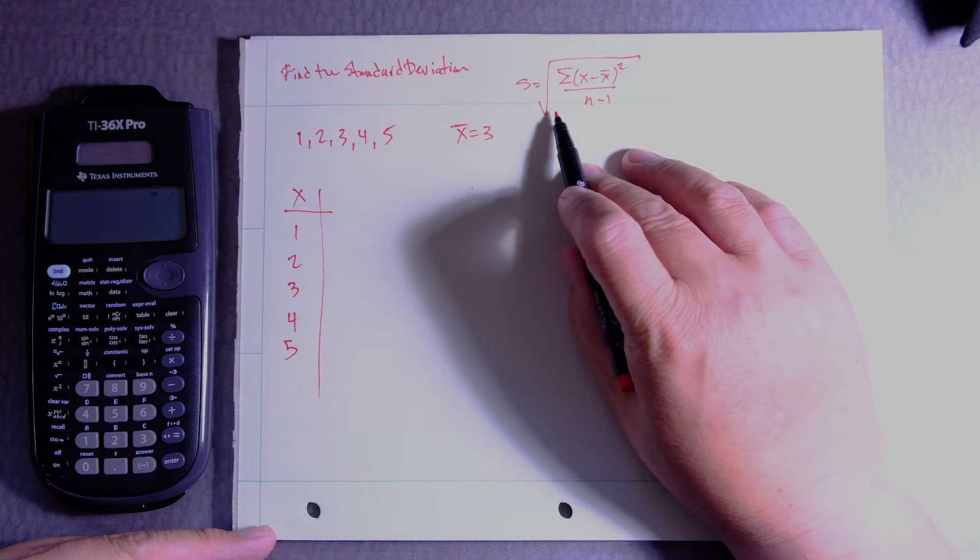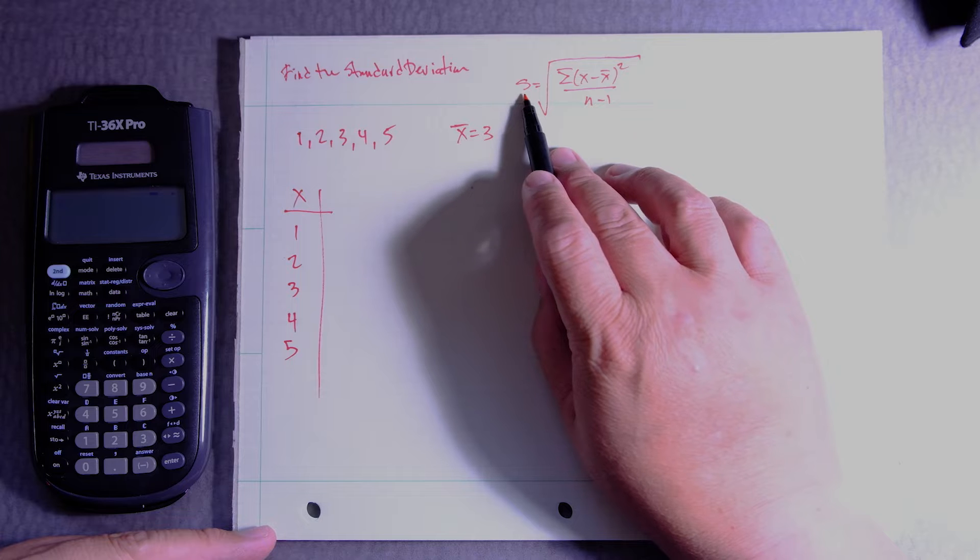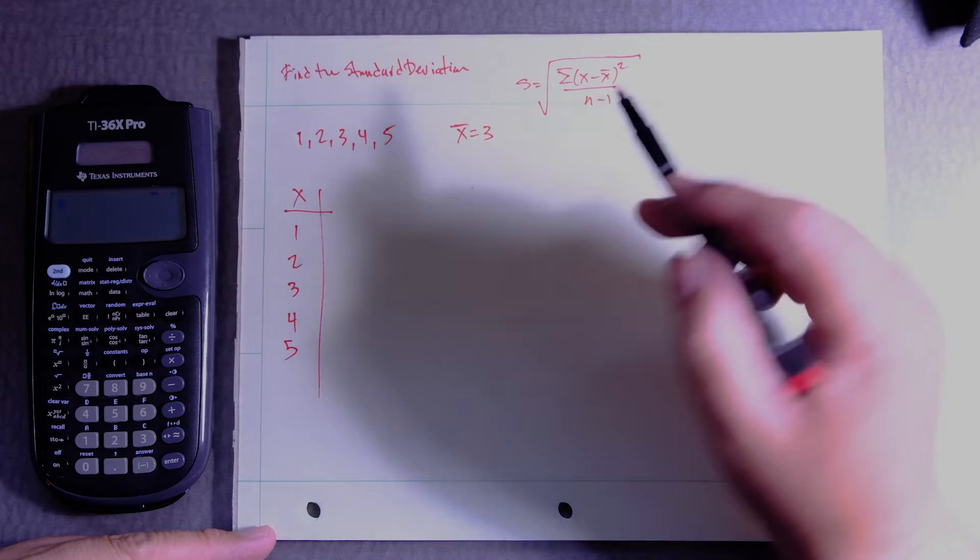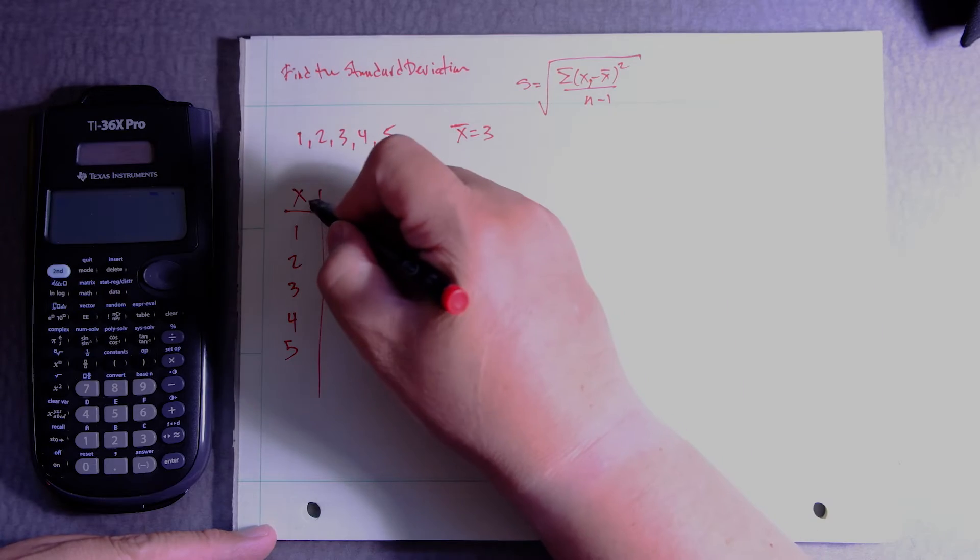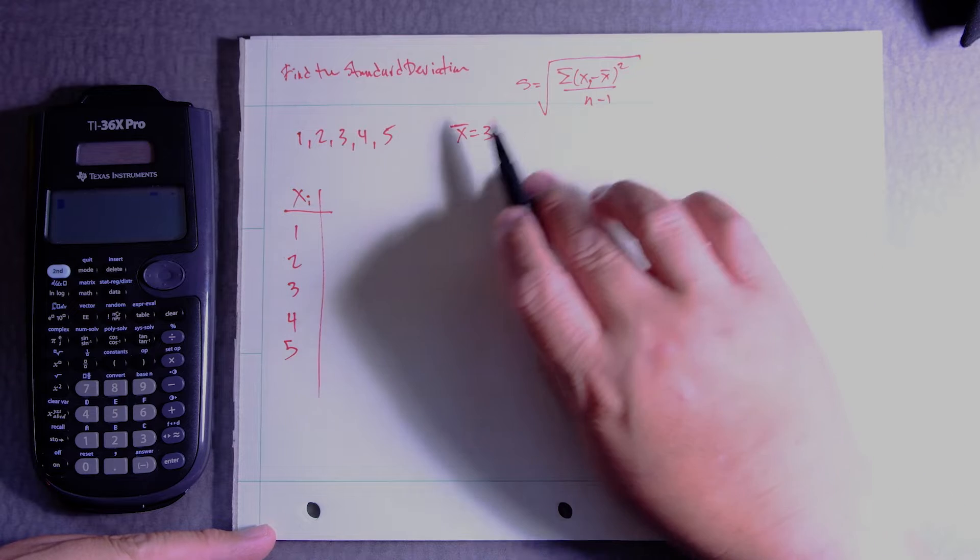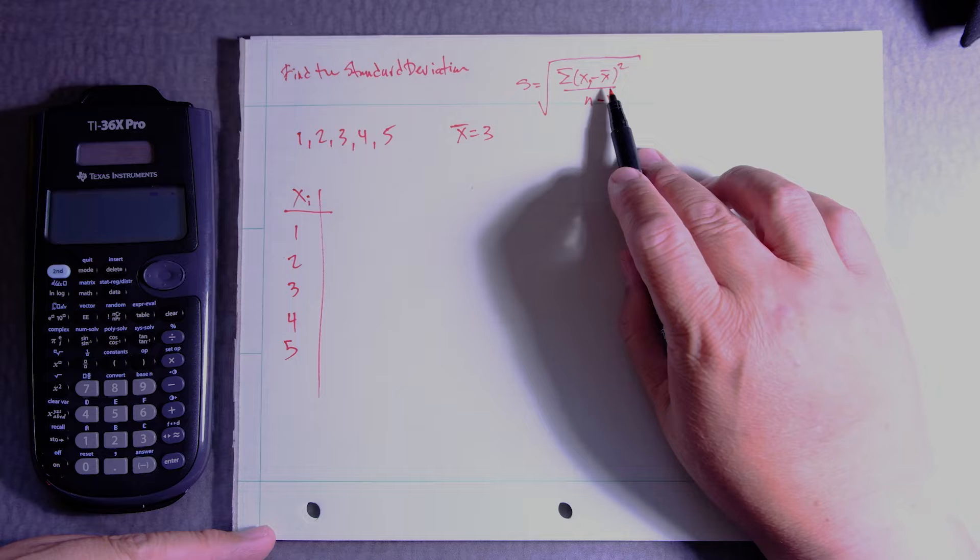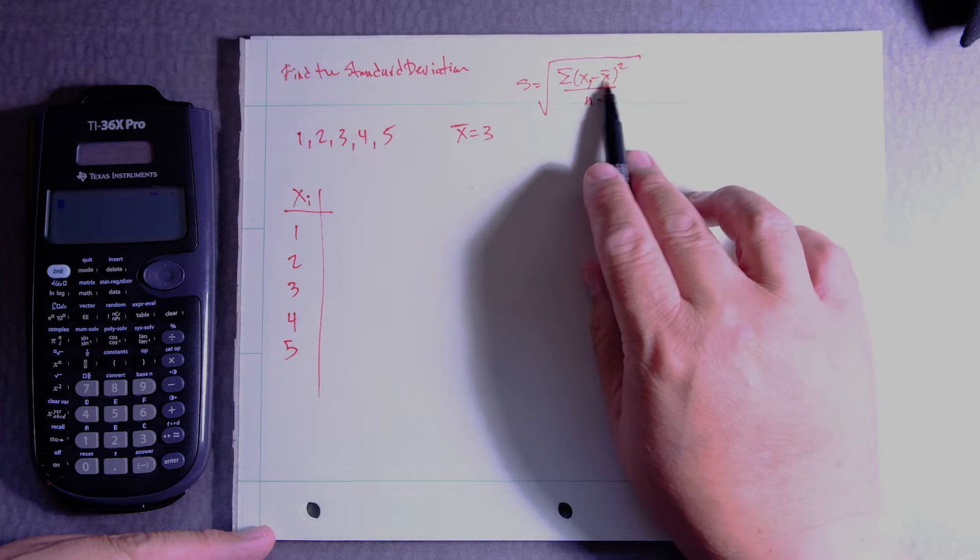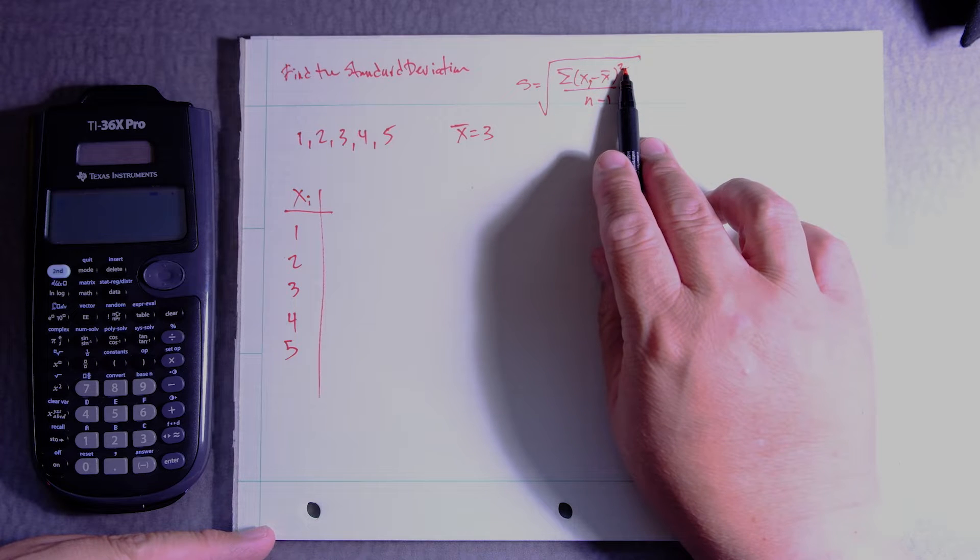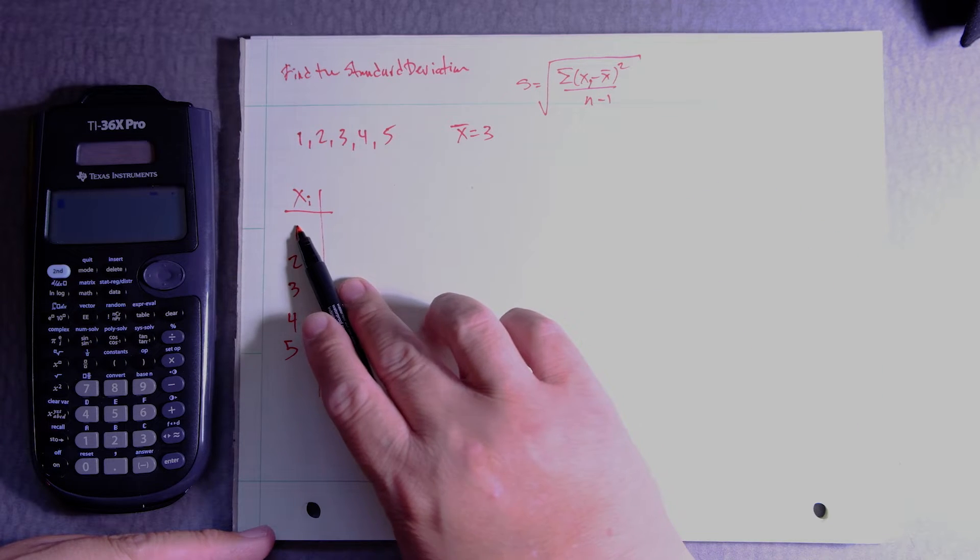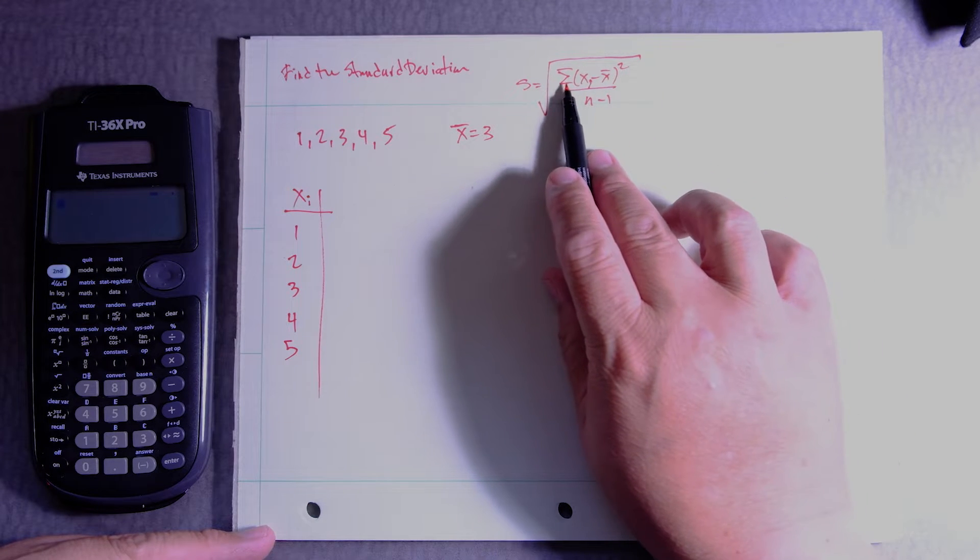This is the standard deviation formula. S is going to be the standard deviation. You got the sum, you got the variable xi, which means these are your data points, minus x bar which is your mean, you're going to square it and divide by n minus 1. You have these parentheses because you got to do this operation first, square it for one of these data points and then you do it again and then you add those because this symbol tells you to add.